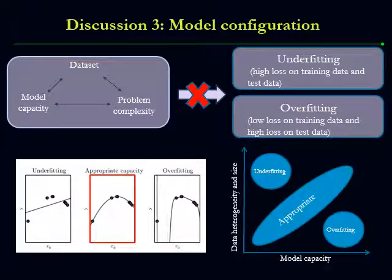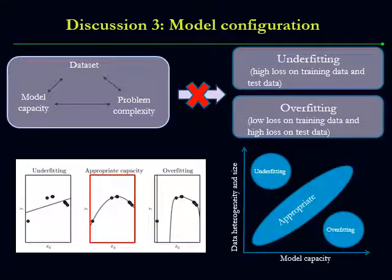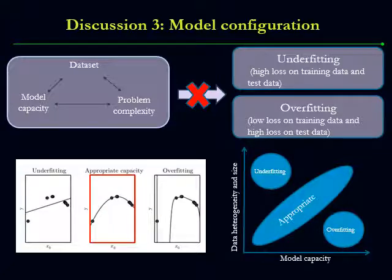When we configure our models, we need to consider the relationship between model capacity and data complexity. The data size is not simply larger-the-better, since not only the data size but also the data heterogeneity should be considered. The model capacity isn't larger-the-better either. They are correlated as shown in the figure: when the data size is very large and model capacity is small, overfitting will happen; on the other hand, if the model capacity is small and data size is large, underfitting will happen.